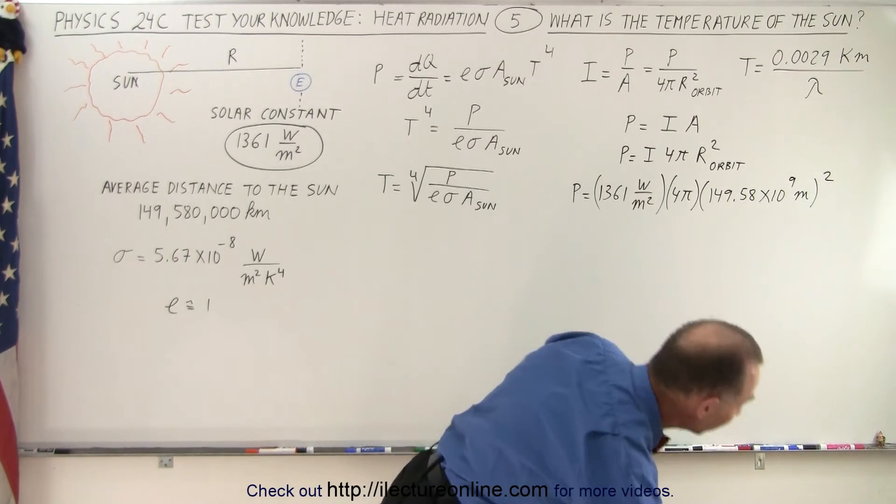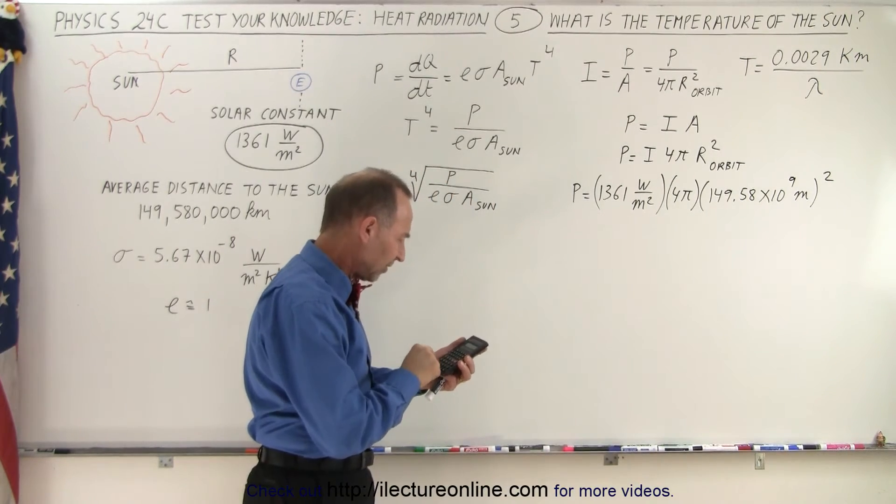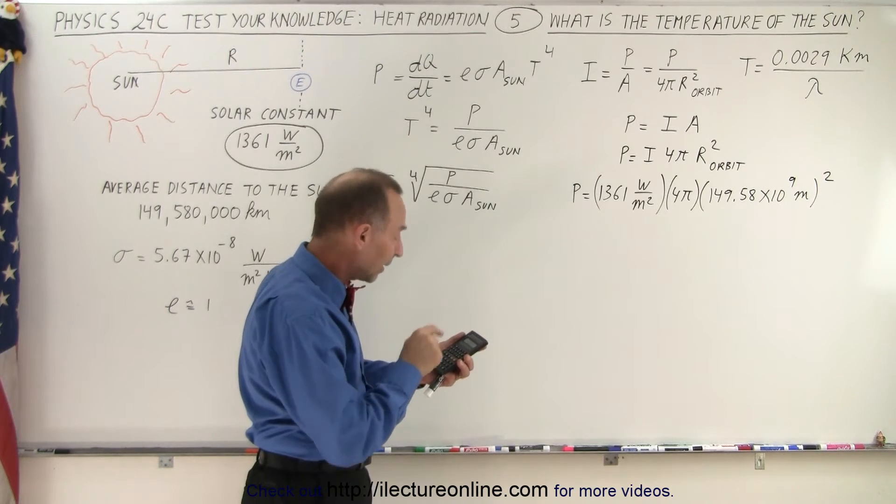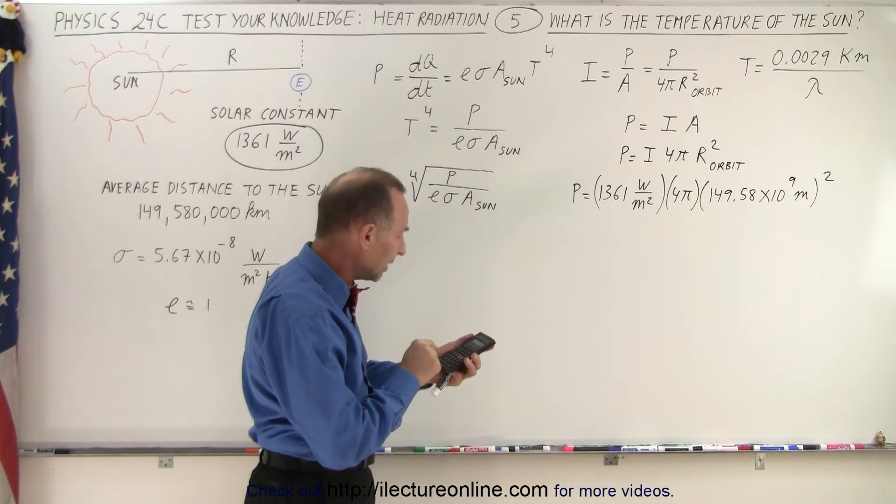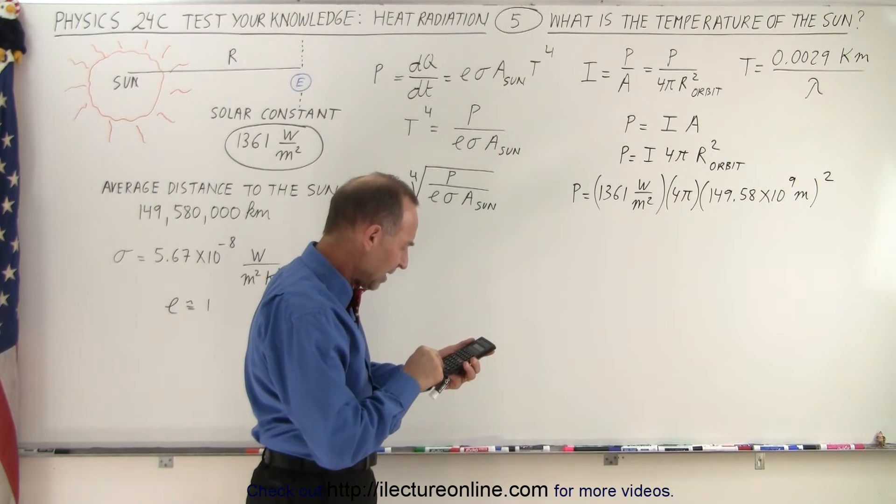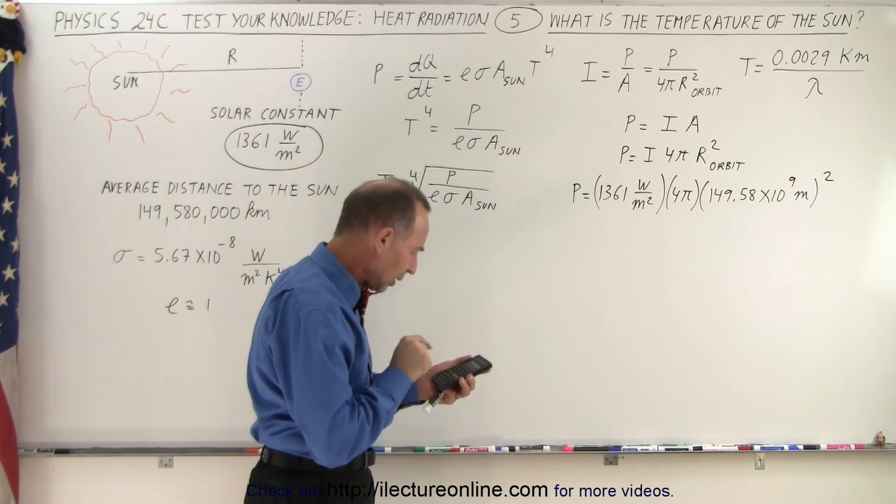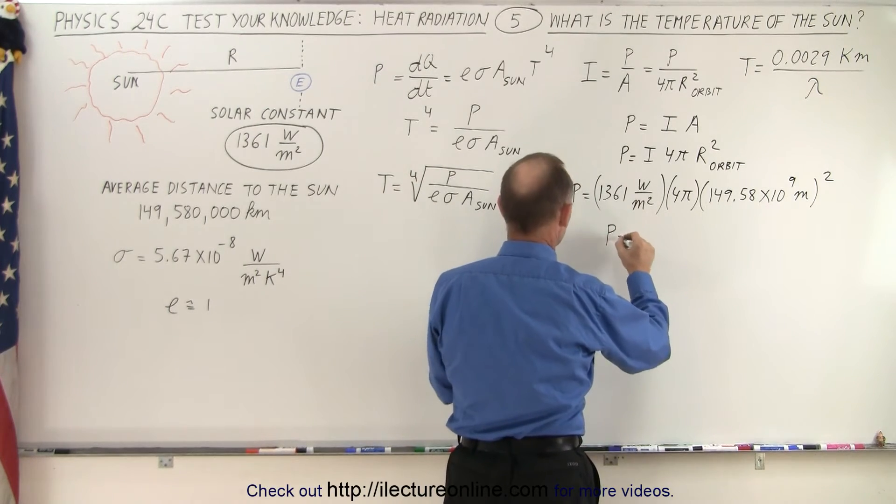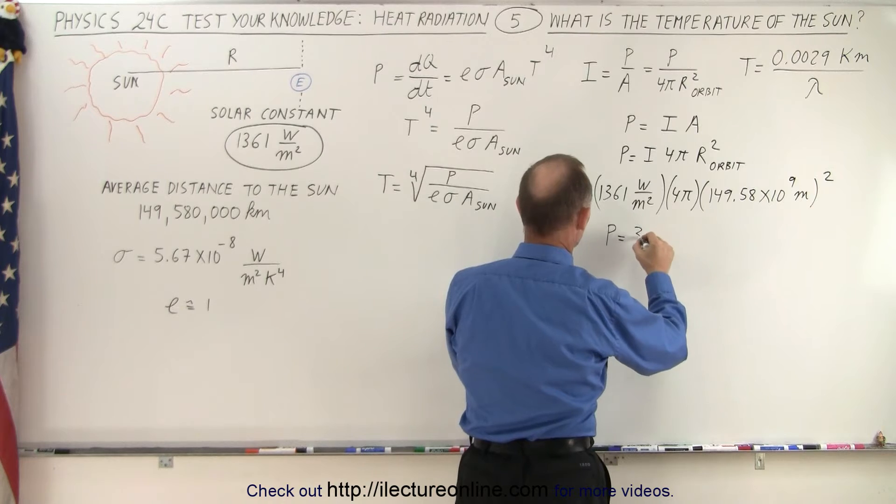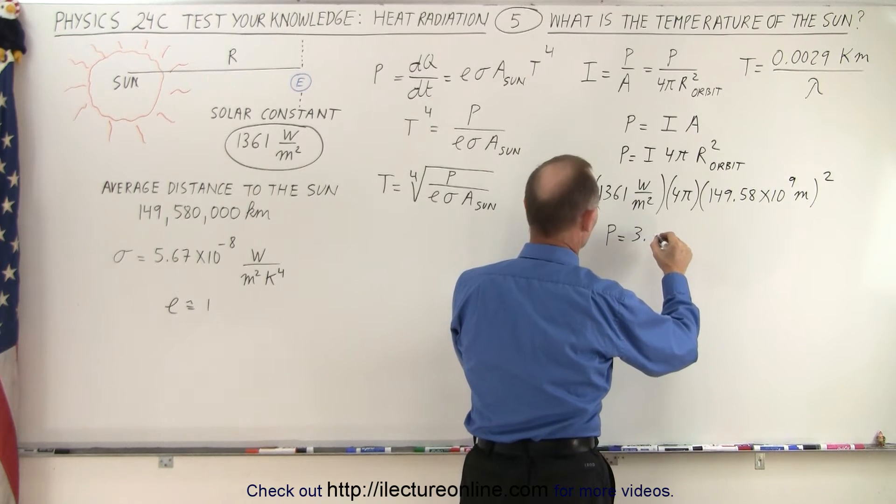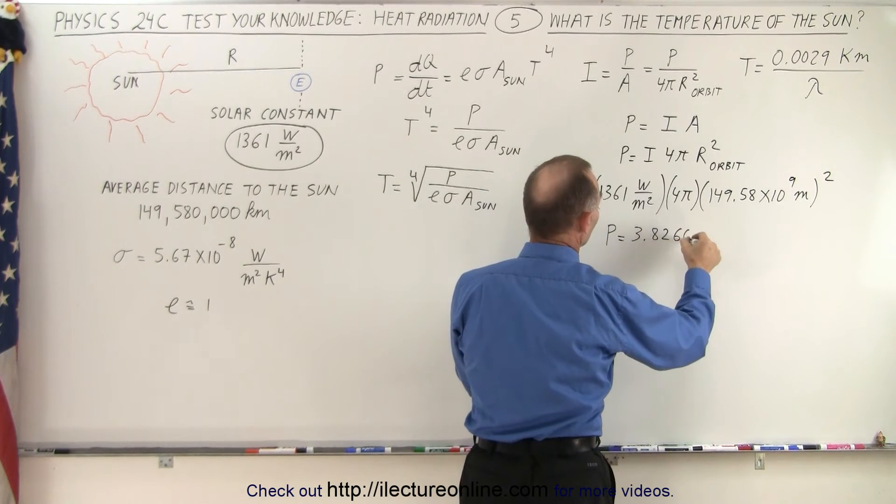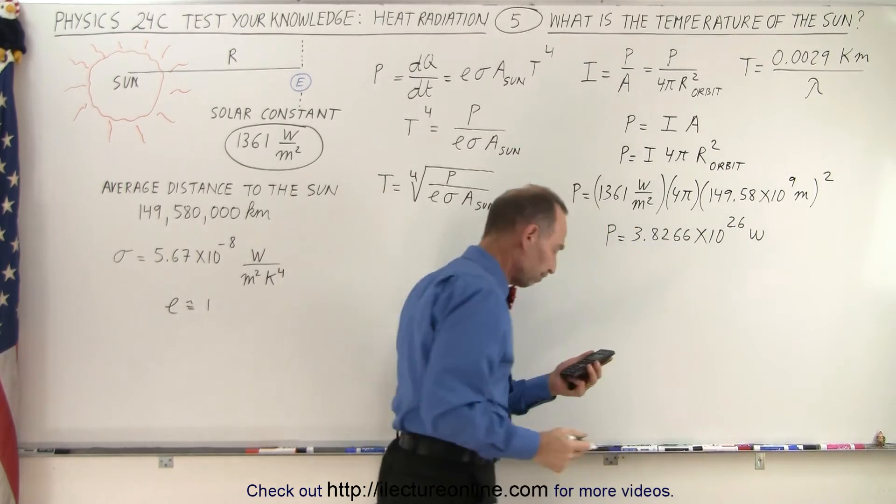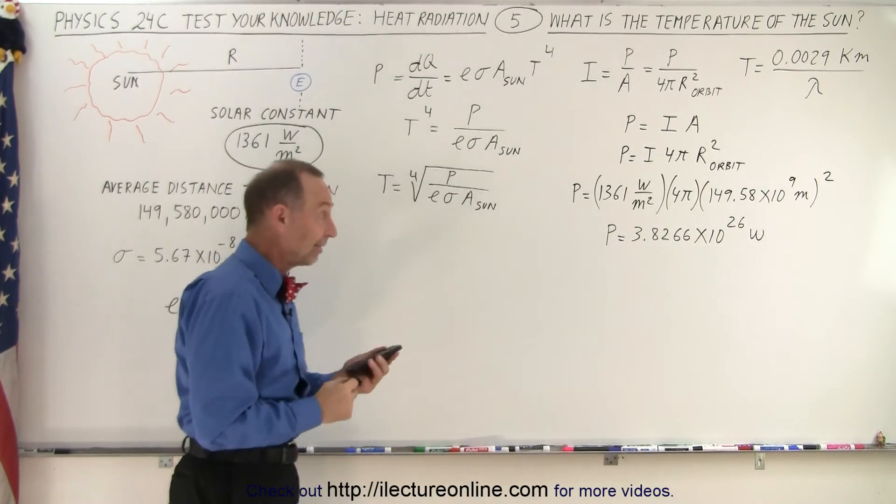Notice meters squared, meters squared will cancel out and we're left with watts. So let's see what this equals. That would be 1361 times 4 times π times 149.58×10⁹ squared equals—we're going to get something pretty big—so the power output of the sun is equal to 3.8266×10²⁶ watts. That's a lot of power.